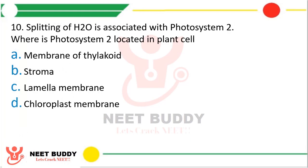Question 10. Splitting of water is associated with photosystem 2. Where is photosystem 2 located in plants? Option A: Membrane of the thylakoids, option B: Stroma, option C: Lamella membrane, or option D: Chloroplast membrane. The correct answer is option A, that is the membrane of the thylakoid.